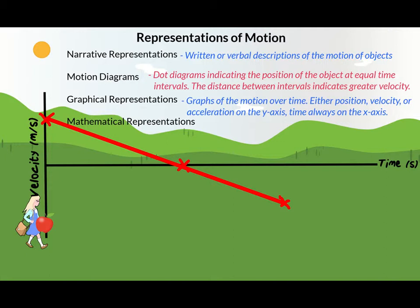What information can we get from this graph? If we calculate the slope — rise over run — we take the magnitude of the velocity along the y-axis, measured in meters per second, over the magnitude of the time along the x-axis, measured in seconds. The slope results in units of meters per second per second, or meters per second squared. Since that is the unit of acceleration, the slope of a VT graph gives us acceleration.